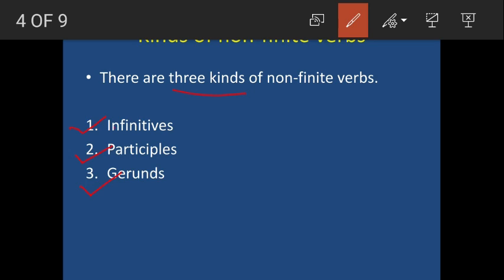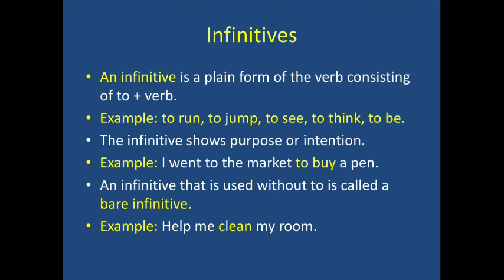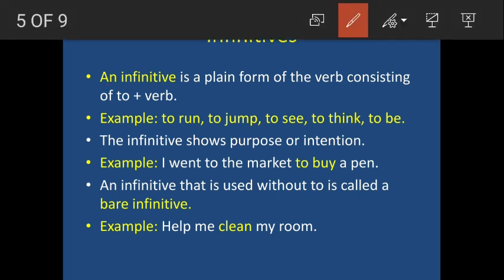Let us start with infinitives. An infinitive is a plain form of verb consisting of 'to' plus verb. When we add 'to' to the plain or root form of a verb, that is called an infinitive. For example: 'to run' — the verb is run, and we have added 'to' before it. Similarly, 'to jump,' 'to see,' 'to think,' 'to be' — these are all infinitives because we have added 'to' to the plain form of the verb.